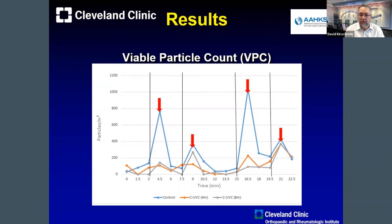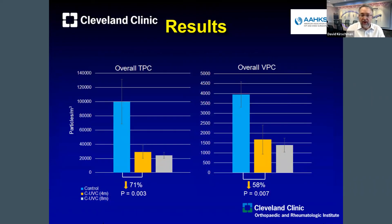Looking at the blue control group versus the surgical air system group at four meters and eight meters, you can see a marked reduction in viable — living bacterial — particles. In tabular form, there was a 71% reduction in overall airborne total particle count and a 58% reduction in the overall viable particle count. Both reductions were statistically significant.